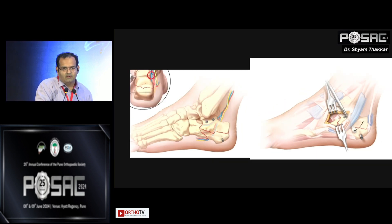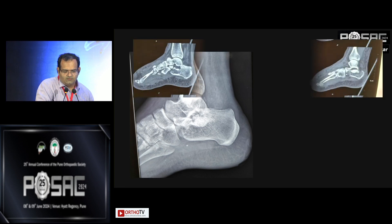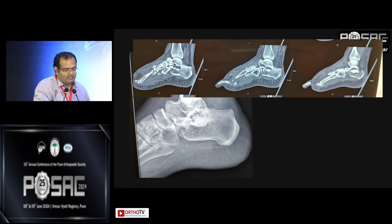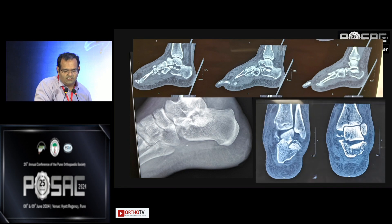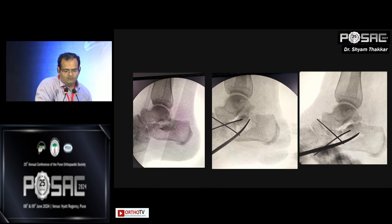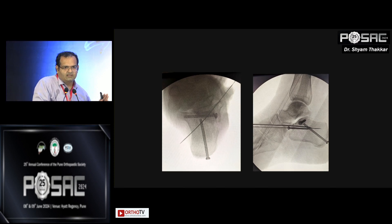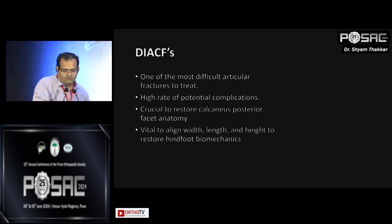Once the intra-articular piece is fixed, the remainder can be stabilized with an additional plate if there is a lateral wall burst fracture — just slide in a plate after subperiosteal dissection. The medial column screw is quite important after reducing the fragment; it holds the fracture fragment and acts as a good buttress. Additional screws can be added. Intra-articular fractures are more difficult due to high complication rates, and it is essential to restore anatomy including width, length, and height.